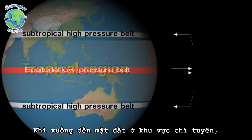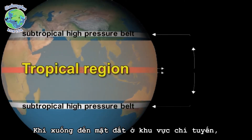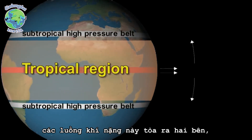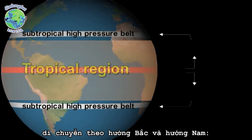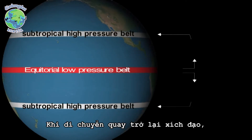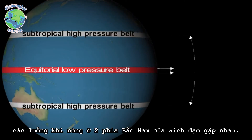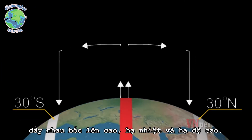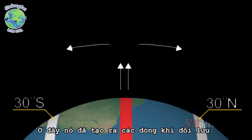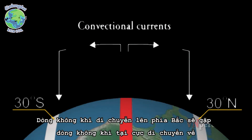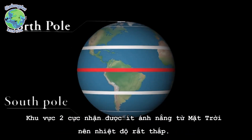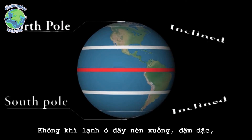These regions are called subtropical high pressure belts because they lie outside the tropical region and at the same time adjoin the tropical region. The sinking air now moves towards north and south. So along the equator the warm air rises, spreads out, cools, and sinks down — in this way it develops convectional currents.